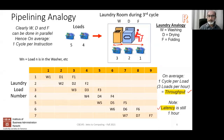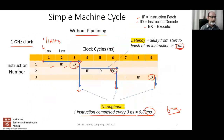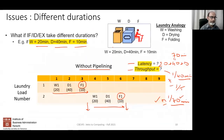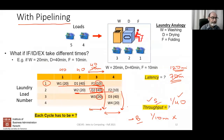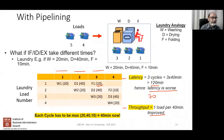A student asks how throughput improves if all steps are made 40 minutes. The instructor explains: without pipelining, one laundry is done every 70 minutes. With pipelining — where the first load is in the dryer while the second is in the washer — the first completes at the end of the third cycle and the second at the end of the fourth, each cycle being 40 minutes. So throughput becomes one load per 40 minutes instead of one per 70.